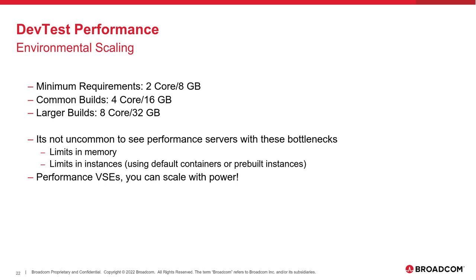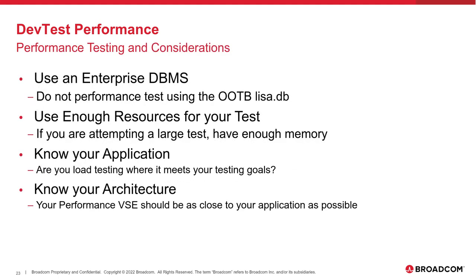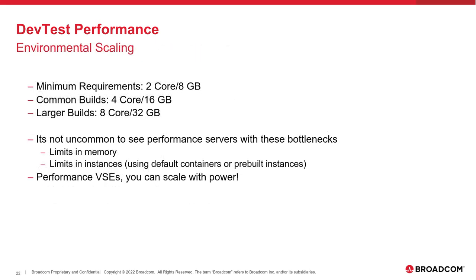Performance VSEs — you want to give as much memory and as much power as you can, because when you give it that power, you're going to scale higher. If your goal is to reach 5,000, 10,000, or 12,000 transactions per second, you're going to want all that power to accept, process the transaction, and move on to the next as quickly as possible.